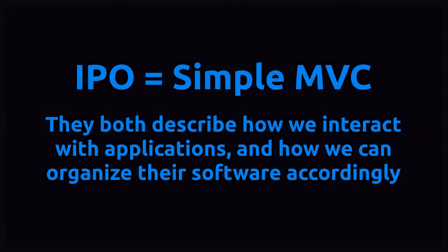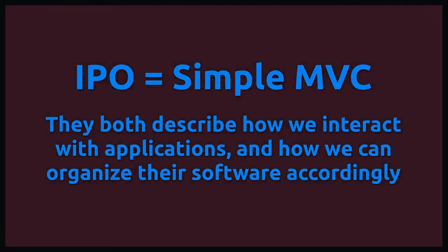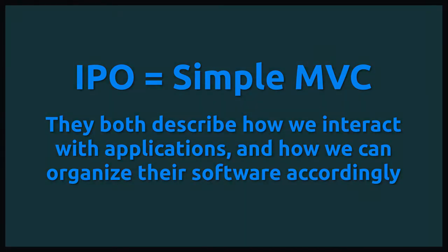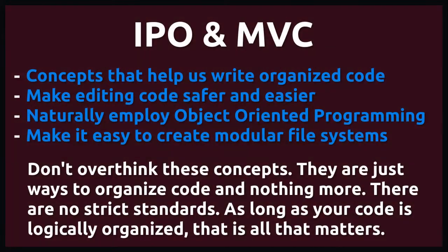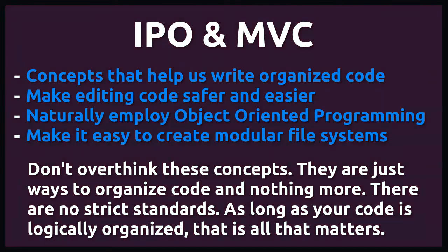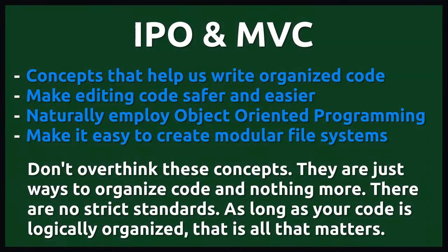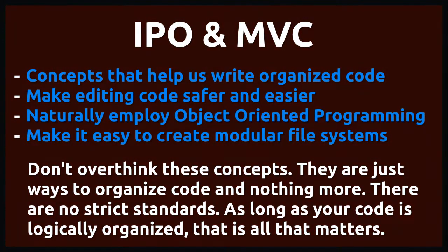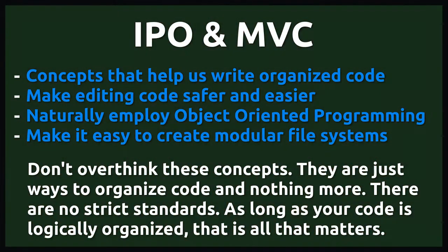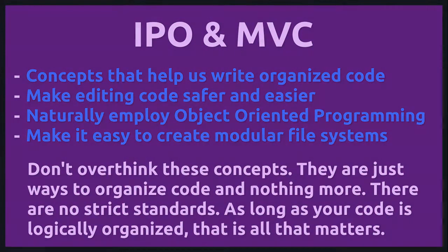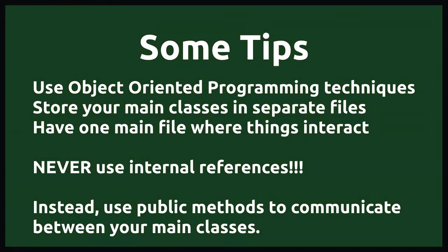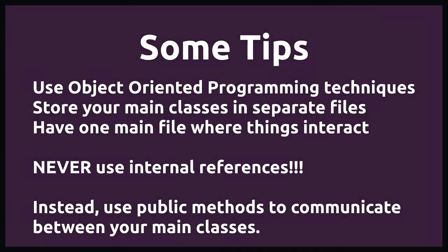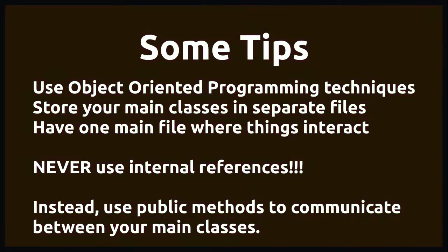IPO is a concept that describes the basic model of how we interact with software. MVC is the same concept with slightly more abstract terminology — rather than input, processing, and output, you have controller, model, and view. By separating components into logical groups, you can more easily maintain code for one component without refactoring another. Writing a self-contained class to manage each component makes code highly modular and reusable. There are no strict standards for implementing IPO or MVC, but follow object-oriented programming principles and always prefer component interaction via public methods over internal references.